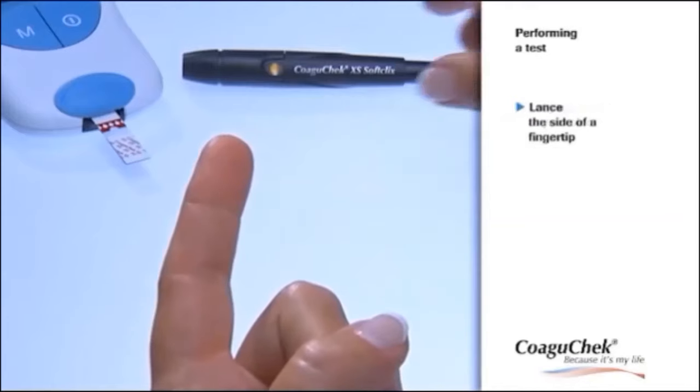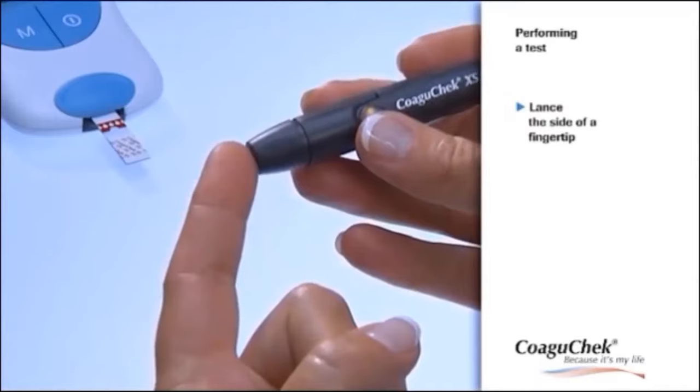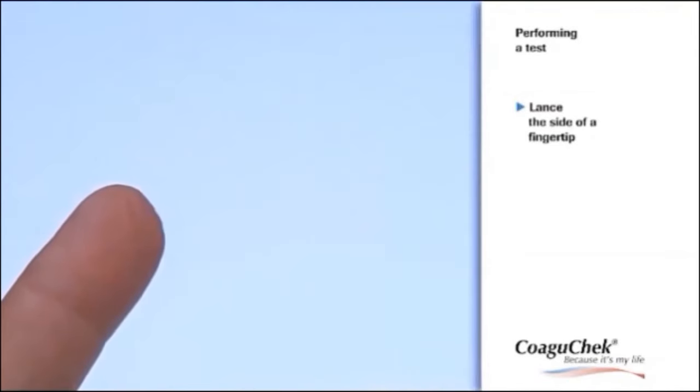Pick up the lancing device and lance the side of the fingertip. Don't worry. CoaguCheck SoftClicks allows a virtually pain-free blood puncture.